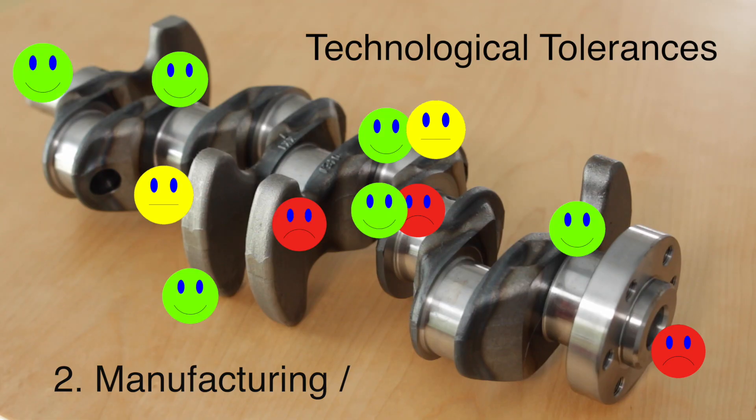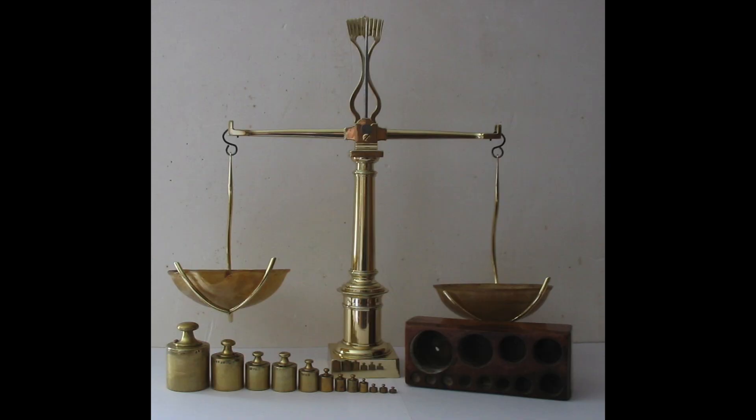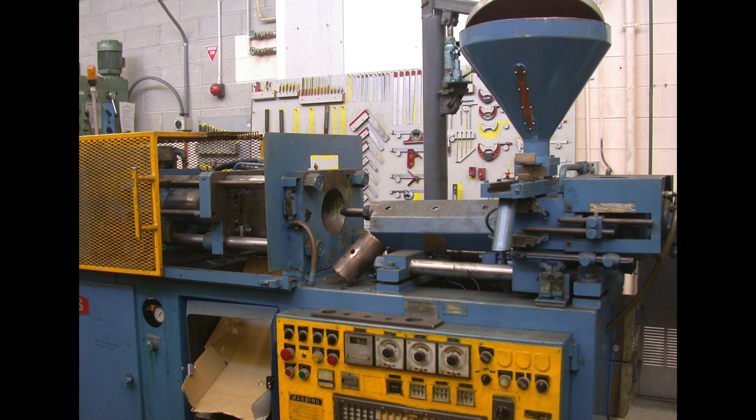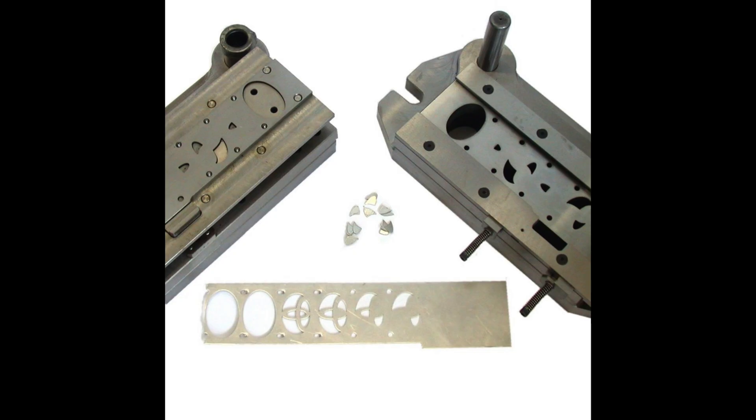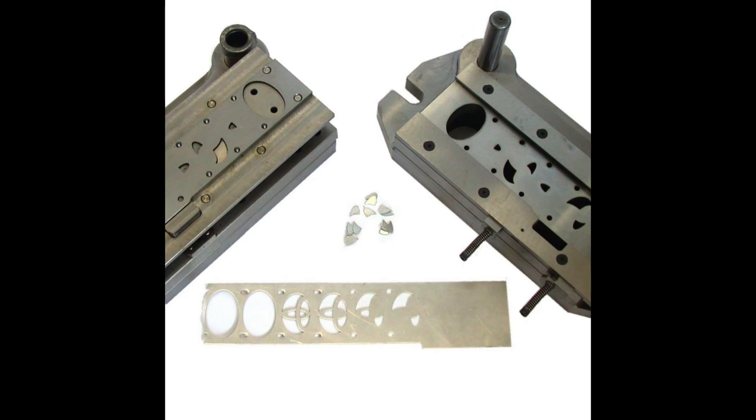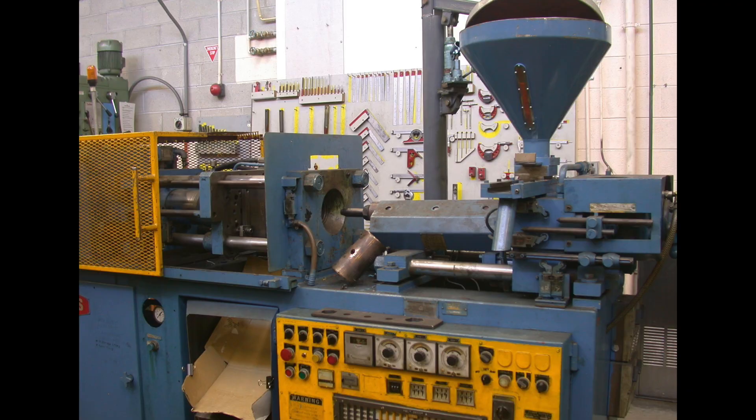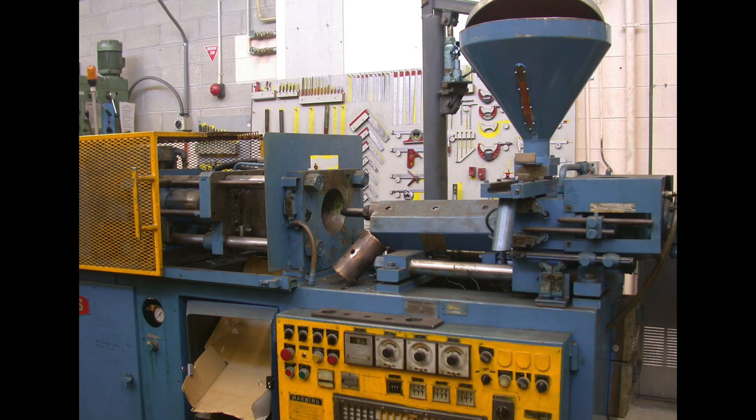The manufacturing or technological tolerances are connected to the specific way in which a part is produced. These are usually tighter than the specification, as they have to account for the process.